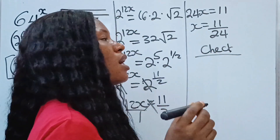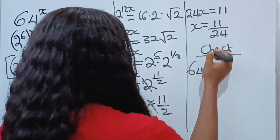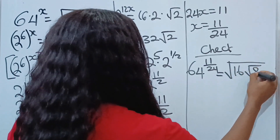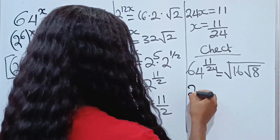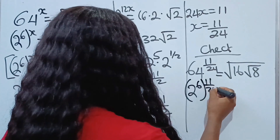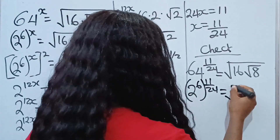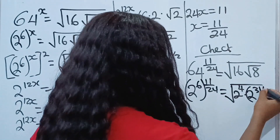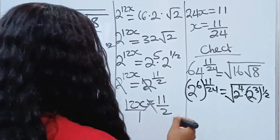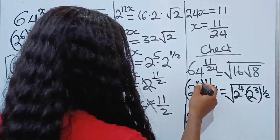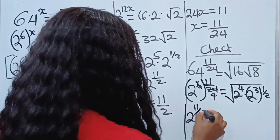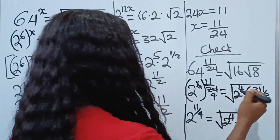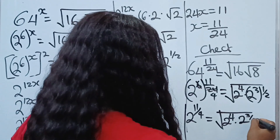It is time to check our solution. We are told that 64 to the power of x, which is 11 over 24, is equal to the square root of 16 times the square root of 8. Now, 64 is the same thing as 2 to the power of 6, raised to the power of 11 over 24. This equals the square root of 16, which is 2 to the power of 4, multiplied by 8, which is 2 to the power of 3, raised to the power of one half. We multiply 3 over 2, and we have 2 to the power of 6 divided by 24 giving us 4, so we have 2 to the power of 11 over 4.